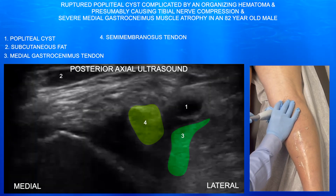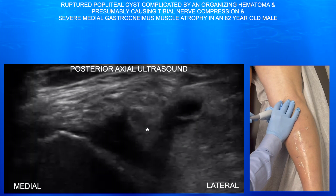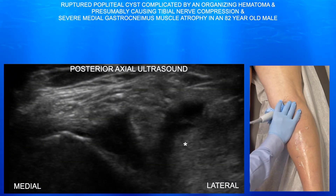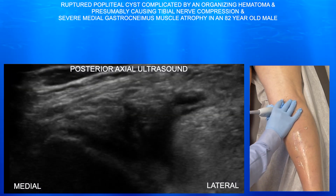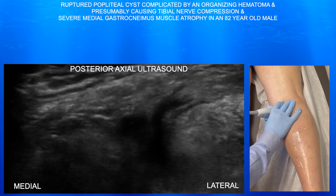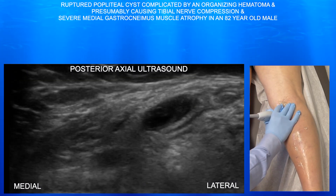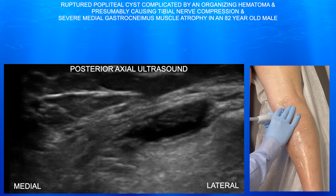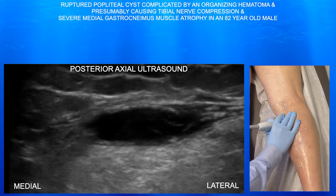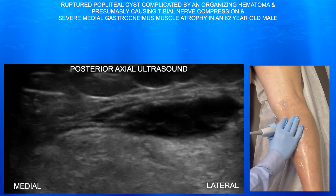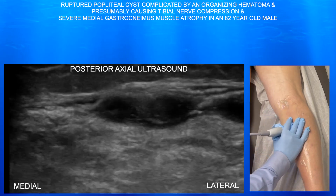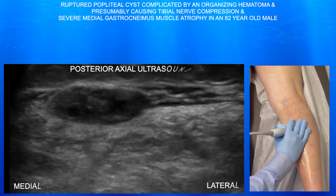Here you can see well the semimembranosus tendon and the medial gastrocnemius tendon essentially at the same time, which is pretty difficult to do. Usually you just get one of them in view at a time secondary to anisotropy.